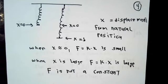When x is very small, the force given by k times x is also very small. Later, when x is larger, k times x could be large as well. So this is a situation where the force is not a constant force.